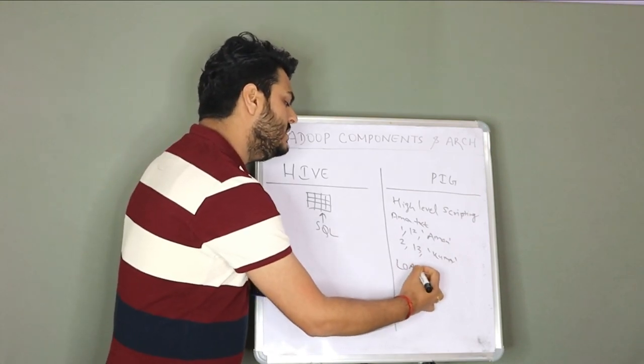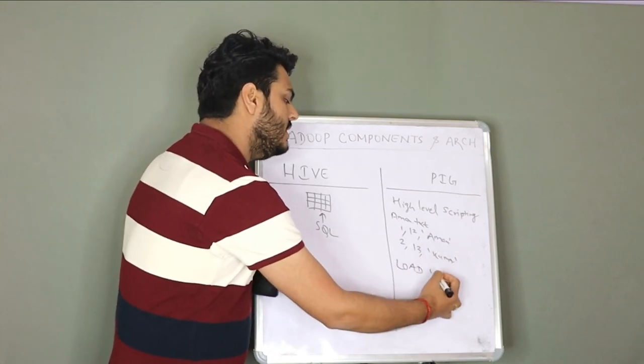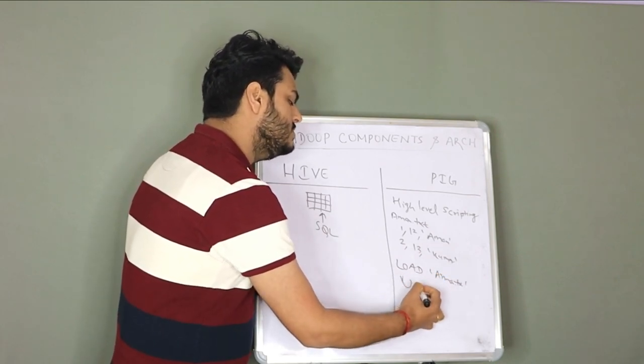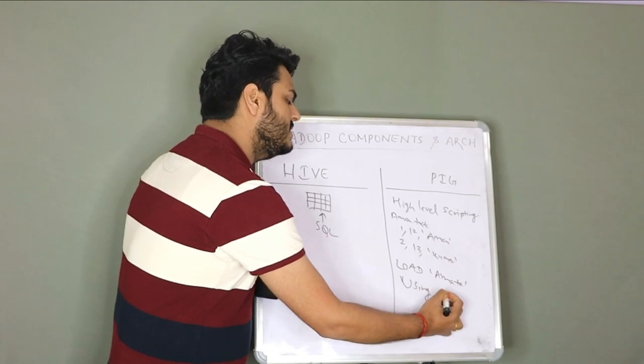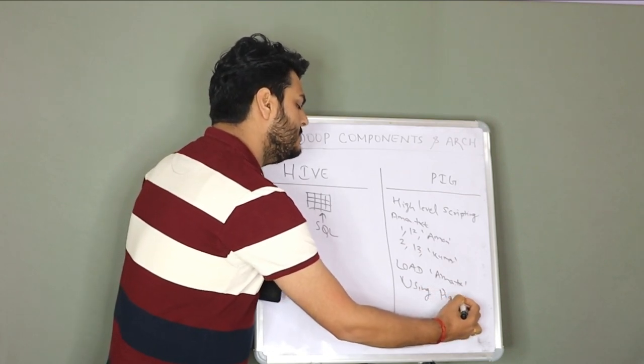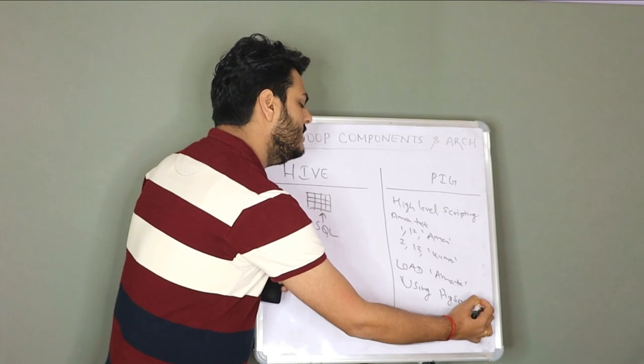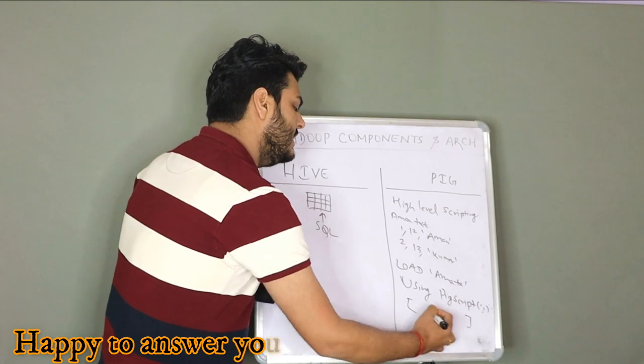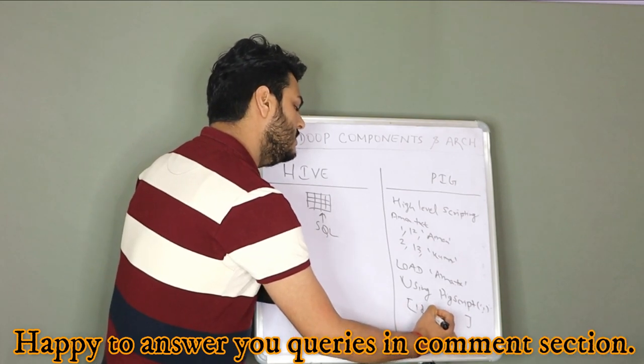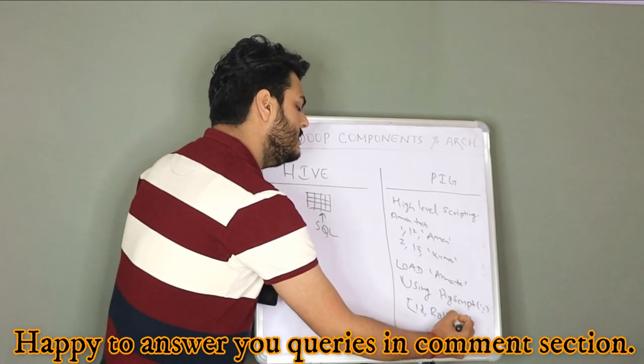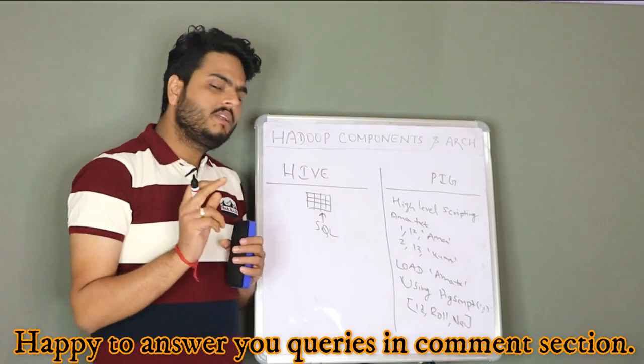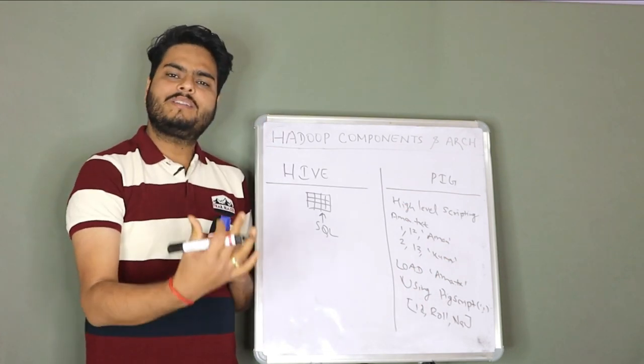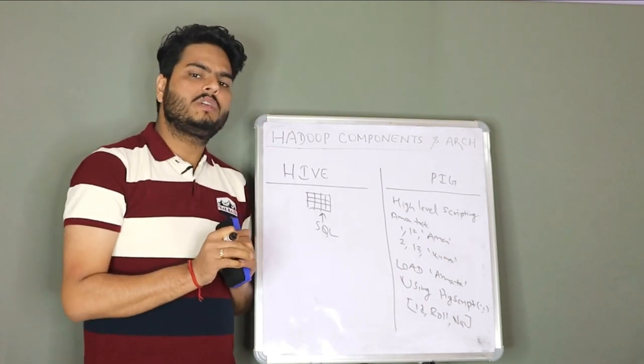Load this file Aman.txt using PIG script. And then you assign your column names. So here you can say ID, roll number and name. This is a very simple format, very simple query in which a PIG script is written to access the data sitting in HDFS.